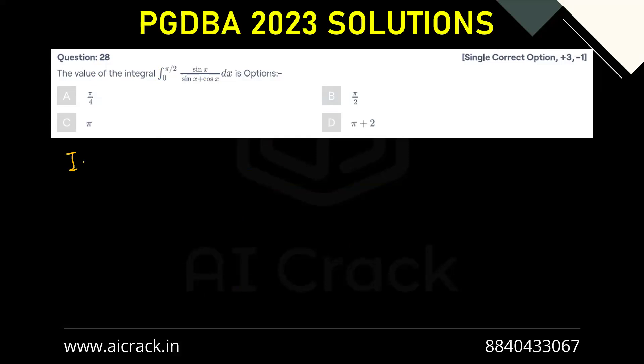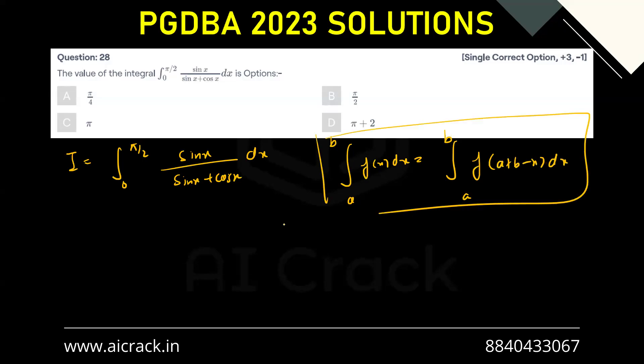So let's say we have I equals 0 to pi by 2 sin x divided by sin x plus cos x dx. So what we'll be doing, we'll be using this property where we say a to b integral f(x) dx equals a to b f of a plus b minus x dx. We'll be using this particular property over here.